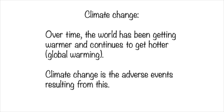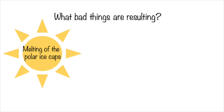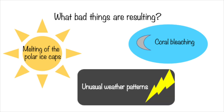Okay, enjoy. Over time the world has been getting warmer and continues to get hotter. This is called global warming. Climate change is the adverse events resulting from this global warming. What bad things are resulting from climate change? Melting of the polar ice caps, coral bleaching, and unusual weather events.